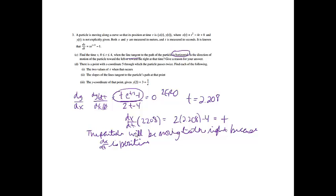This part of the problem was worth 3 points. If you considered the derivative equaling 0, that's worth a point. If you found the t value is 2.208, give yourself a point. And if you said how the particle is going to be moving and why, you get that last point.